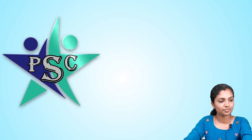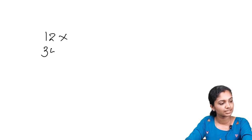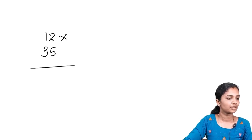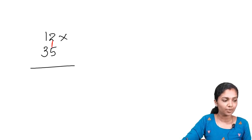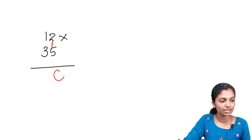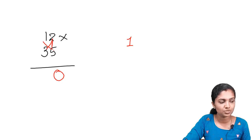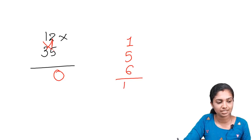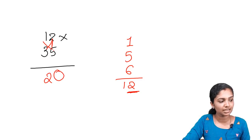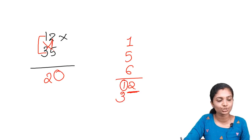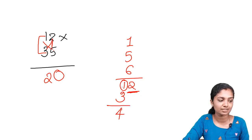Now 12 into 35. 2 into 5 is 10, write 0 and carry 1. Now multiply diagonally: 1 into 5 is 5, and 2 into 3 is 6. Add: 5 plus 6 is 11, plus carry 1 is 12. Write 2 and carry 1. Now 1 into 3 is 3, plus carry 1 is 4. So the answer is 420.